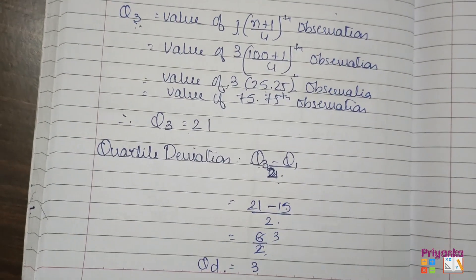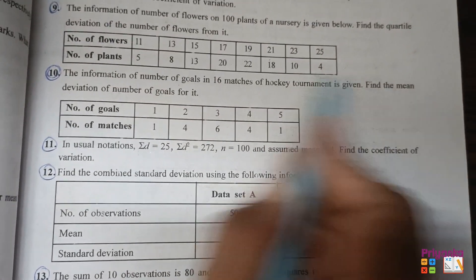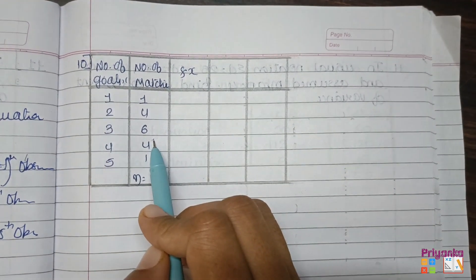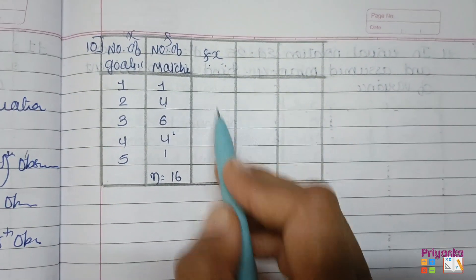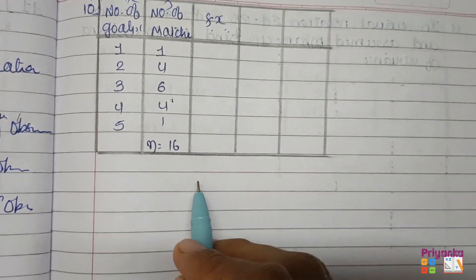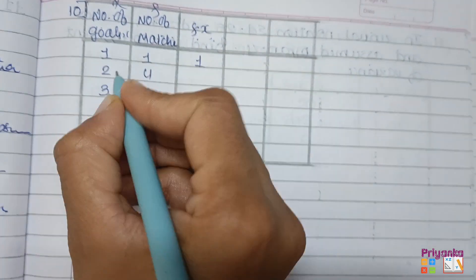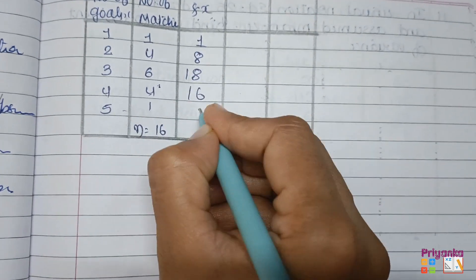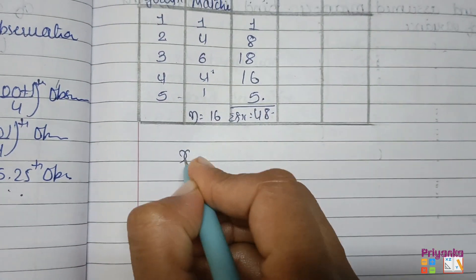Moving to the next question: the information of number of goals in 16 matches of a hockey tournament is given. Find the mean deviation of number of goals. Here the number of goals (observation) and number of matches (frequency) are given. Let's take the information in our table. First we find fx — the multiplication of these two columns. So: 1 times 1 is 1, 2 times 4 is 8, 3 times 6 is 18, 4 times 4 is 16, and 5 times 1 is 5. Take the total to find the mean: sigma fx equals 48.